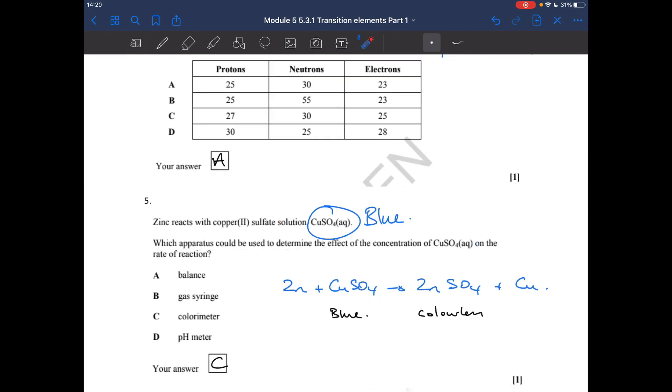Which apparatus could be used to determine the effect of concentration of copper sulfate aqueous on the rate of the reaction? There's a reminder there that this is blue because it contains aqueous copper 2 plus ions. There's the reaction equation, and you can see that this blue colour goes to a colourless solution because you form zinc sulfate. So you could use a colorimeter to measure the rate of that reaction.